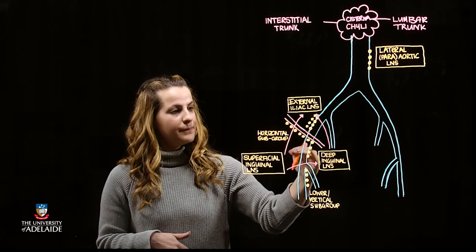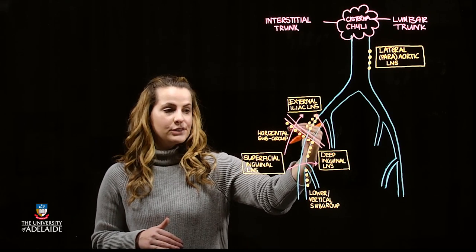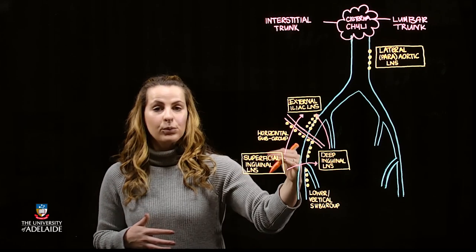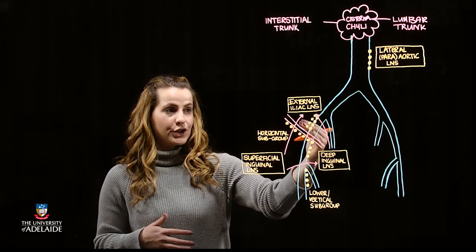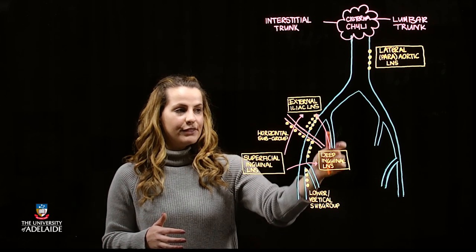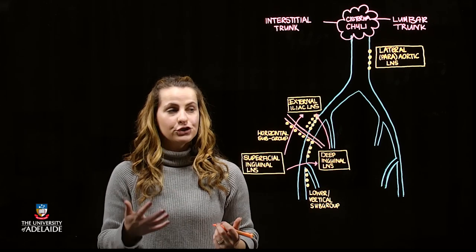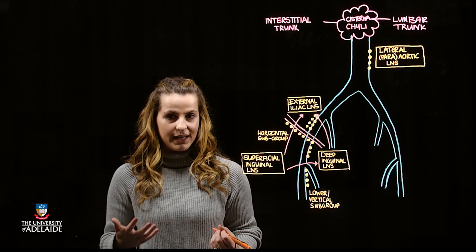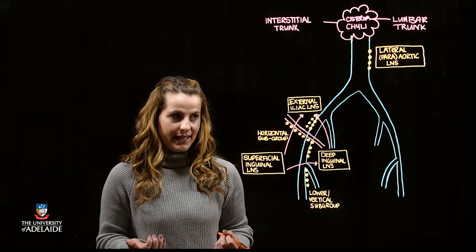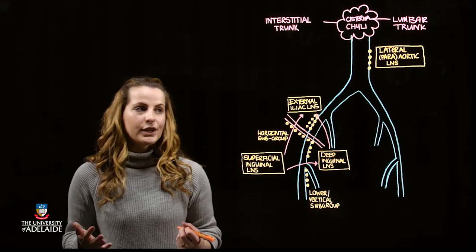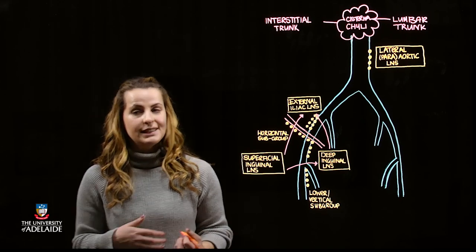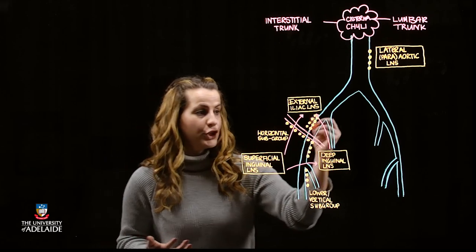Coursing proximally, once we have passed the level of the inguinal canal or ligament, the femoral vein continues as the external iliac vein. We also have a tributary that contributes to the formation of the common iliac vein, which is the internal iliac. As you would expect, located on the internal iliac vein and vessels, we see the internal iliac lymph nodes.